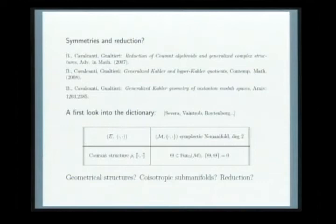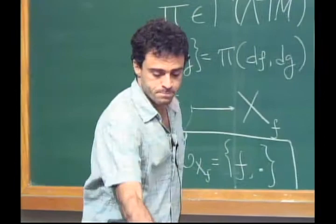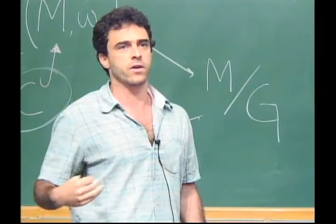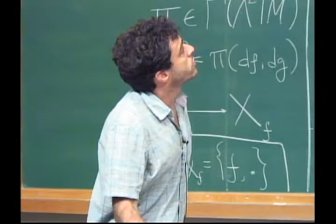I'm going to call them N-manifolds, where N stands for an integer. When N equals zero, this will be just a usual manifold. N equals one will be something else, N equals two something else, and so on — a whole hierarchy of objects. In degree zero, you can think of a manifold as described by its smooth functions: if you know what the smooth functions are, you know what the smooth structure is. This is the viewpoint of algebraic geometry or noncommutative geometry.